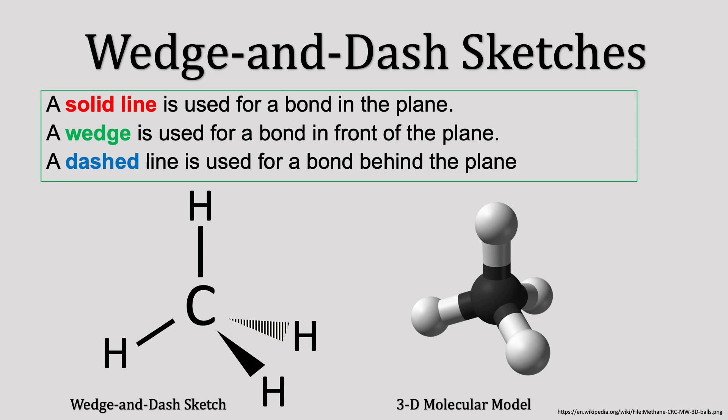A common way to represent three-dimensional structures is by using the wedge and dash sketch. I'll use the simple example of methane here.